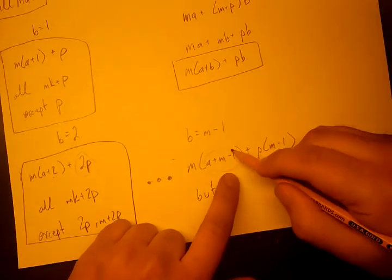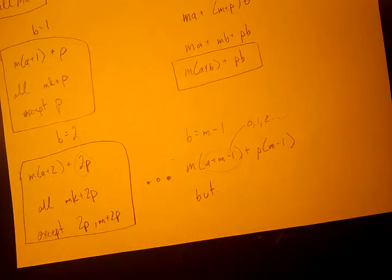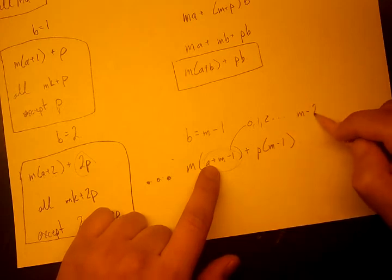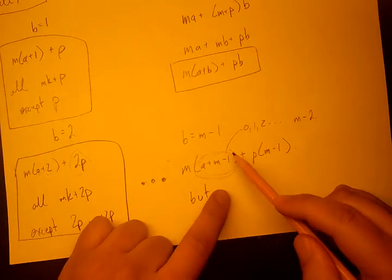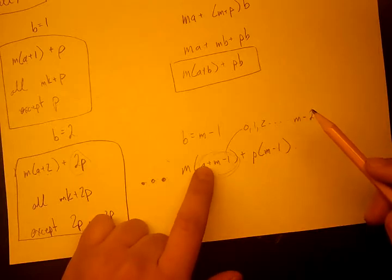So this can't take which values? It can't take zero, one, two, dot dot dot. And more generally, it can't take which values? It can't be m minus two. Because if this was m minus two, a would be negative one. And the smallest it can be is zero.